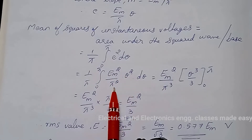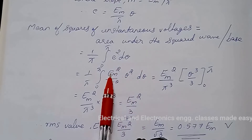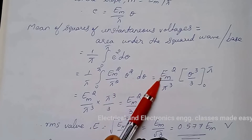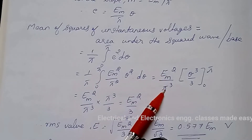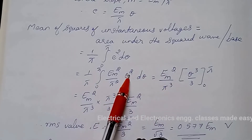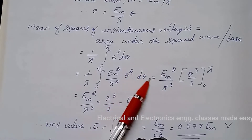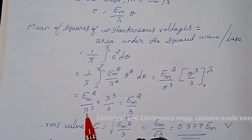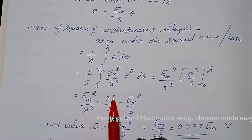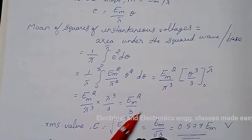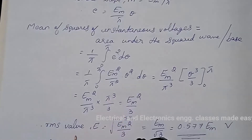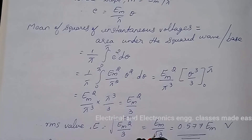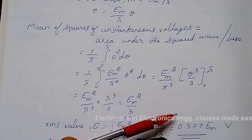We get em squared divided by 2, and since em and pi are constants, take them outside. We get em squared divided by 2 pi cubed. The integral of theta squared is theta cubed divided by 3. Substituting, we get em squared by pi cubed into pi cubed divided by 3, giving em squared by 3. The RMS value is the square root of that, which is em by root 3, equal to 0.577 em volt.